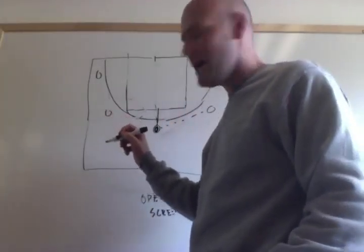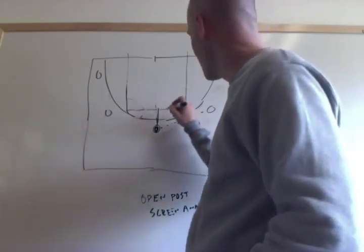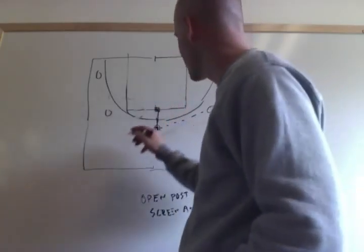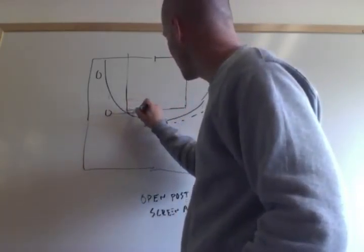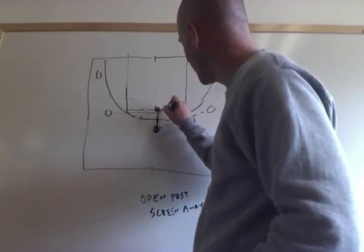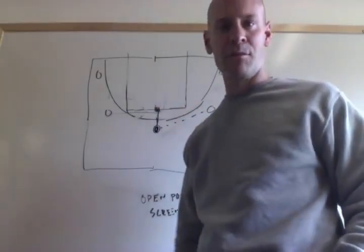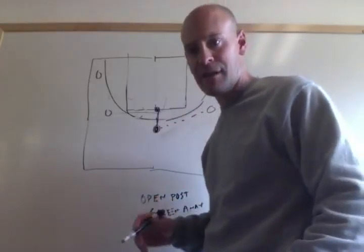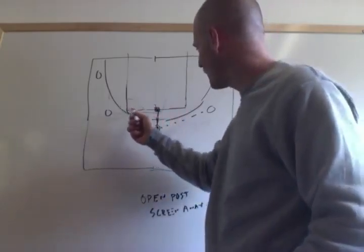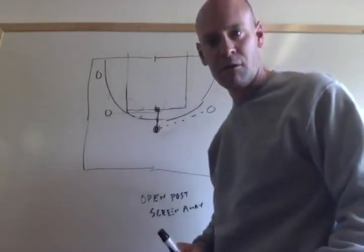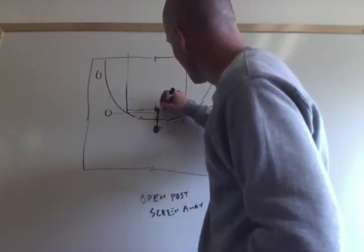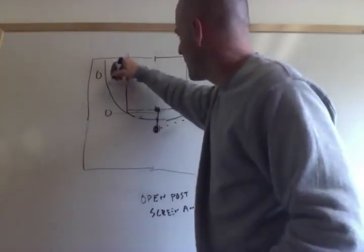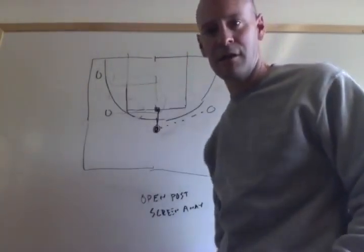If we're going to screen away for the person rotating up from the wing, we want to set the screen right on the sweet spot that we've talked about in the cutting series. We want that wing player cutting to the foul line and then either making the basket cut or popping out to the perimeter. You've seen Bob Huggins' West Virginia team - they make a living on this action, often getting guys curl cutting to the basket.